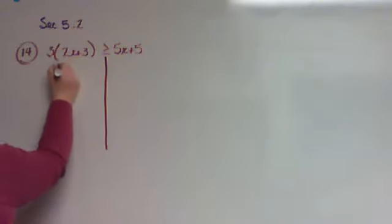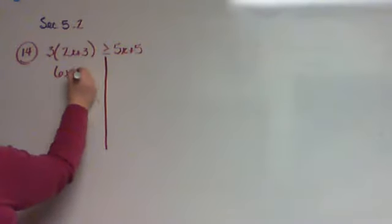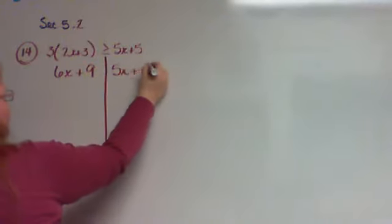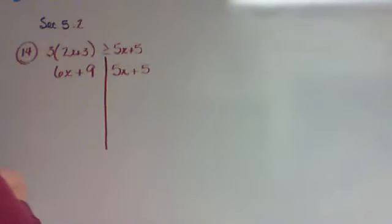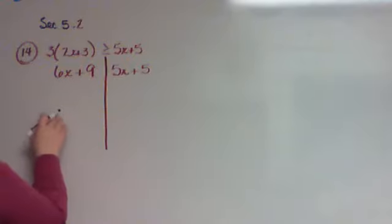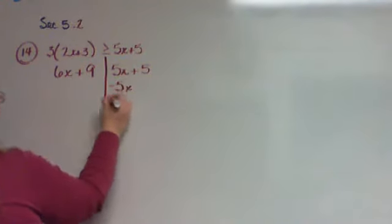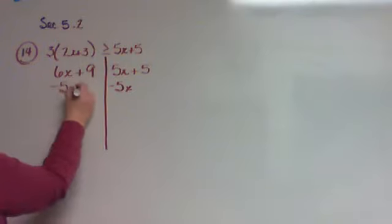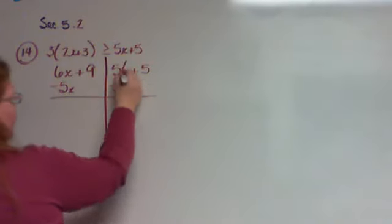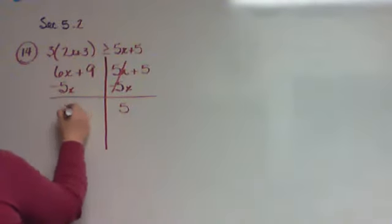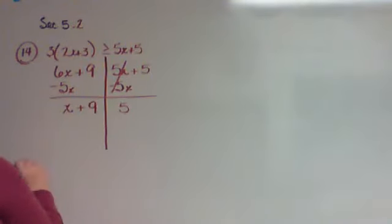So the first thing I'm going to do is draw my line. Then I need to get rid of my parentheses, so 6x plus 9 equals 5x plus 5. Then I always want my letter on the left-hand side, so I'm going to move it from over here to over here. That makes that one go away. It leaves me with a 5 over there and an x plus 9 over here.